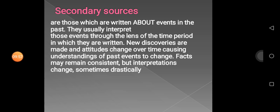Secondary sources are those which are written about events in the past. The information may be real, but it is not within that same time or date. They usually interpret those events through the lens of the time period in which they are written. New discoveries are made and attitudes change over time, causing understanding of past events to change. Facts may remain consistent, but interpretations change — sometimes drastically. That was the difference between secondary and primary sources.